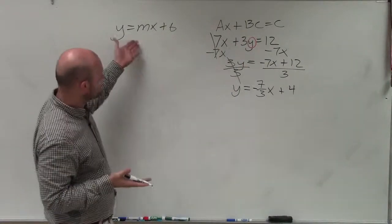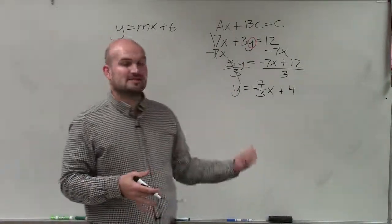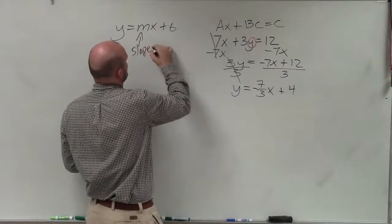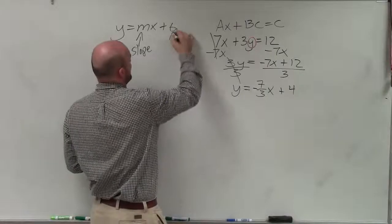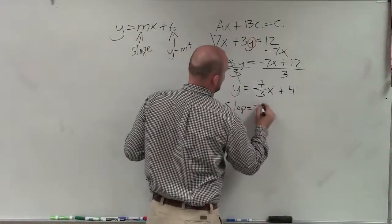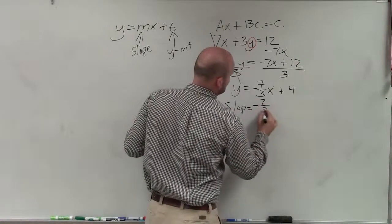So now I have it in slope-intercept form. I can identify what is the slope, what is the y-intercept, and then graph. Remember, your m, your coefficient of your linear term, is going to be your slope, and b represents our y-intercept. So I'm going to write slope is equal to negative 7 thirds.